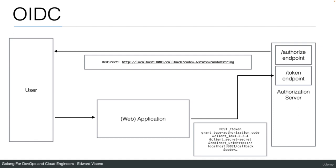The web application now has the code and can request a JWT token from the /token endpoint using a POST. The grant type is authorization code, and the application must supply the client ID and client secret. Only because it has the client secret can it receive the token — it also needs the code that was given by the authorization server when the user entered correct credentials.